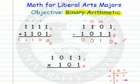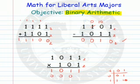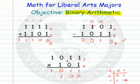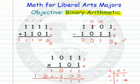How about a multiplication problem? 1 times 1 is 1. 1 times 1 is 1. 1 times 0 is 0. 1 times 1 is 1. The next line is 0 — you can put in all your 0s if you want, or leave that line out and just put in two 0s and start in this column. 1 times 1 is 1. 1 times 1 is 1. 1 times 0 is 0. 1 times 1 is 1. Adding all these up: 1, 1, 1, then 1 and 1 is 10, then 1, 1. And that would be my answer in base 2.